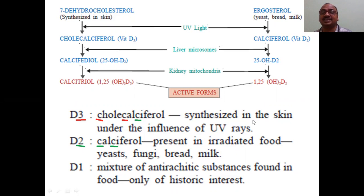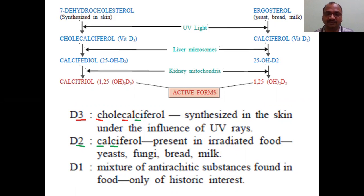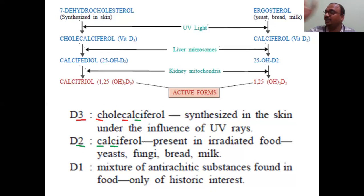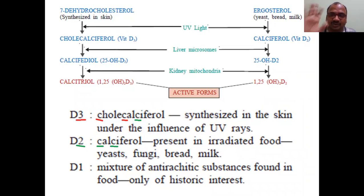D3 is synthesized in the skin — that is also very important. Which vitamin D form is synthesized in the skin? D3, synthesized in the skin under the influence of UV rays. UV rays come from the sun — sun is a natural source of UV rays. Morning you go for a half-hour walk in the sunlight and you will get D3.